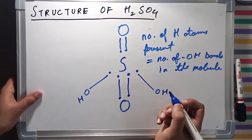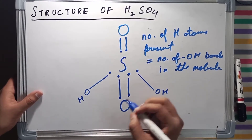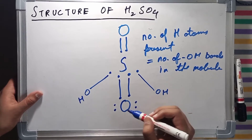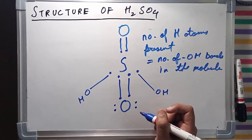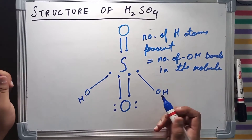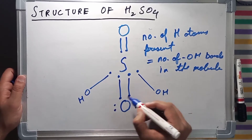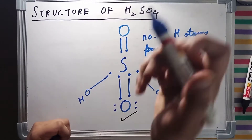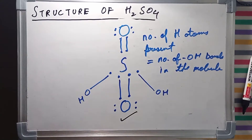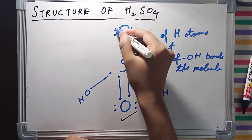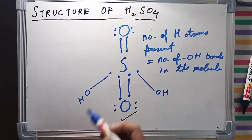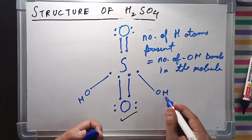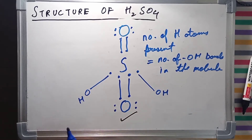Oxygen donated its 2 electrons and now it has 4 electrons with itself. Did oxygen fulfill its need of valence electrons? Counting: 1, 2, 3, 4, 5, 6, 7, 8 — oxygen has completed its need of valence electrons. Similarly, this oxygen has also completed its need of electrons. This oxygen and this oxygen are done, and hydrogen just makes a single bond, so it has completed its duplet. Similarly, this hydrogen has also completed its duplet.